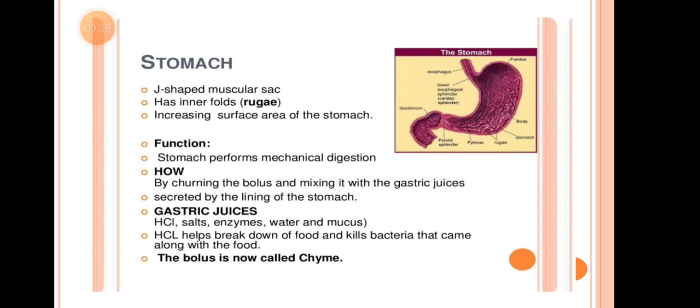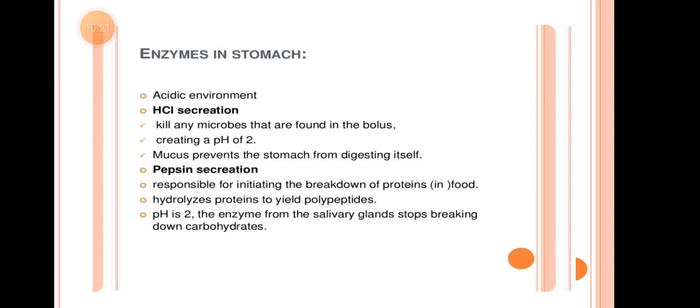The gastric juices produced by the stomach lining include: HCl (hydrochloric acid), salts, enzymes, water, and mucus. HCl helps break down food and kills bacteria that came along with the food. Once inside the stomach, the bolus is now called chyme.